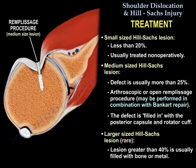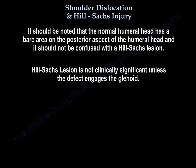When you have a large Hill-Sachs lesion, which is rare, the region is usually greater than 40% and is filled with bone or metal. It should be noted that the normal humeral head has a bare area on its posterior aspect and this should not be confused with a Hill-Sachs lesion. A Hill-Sachs lesion is not clinically significant unless the defect engages the glenoid.